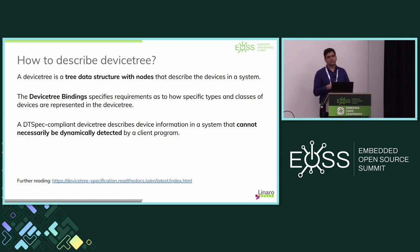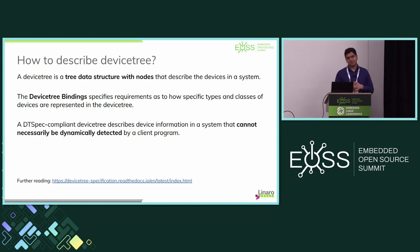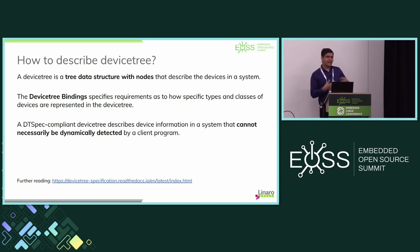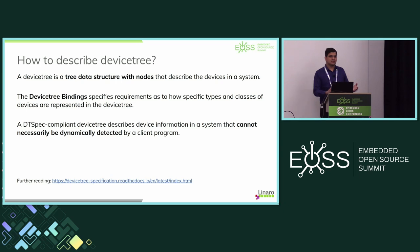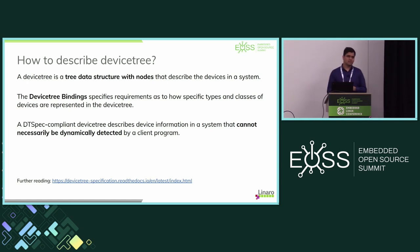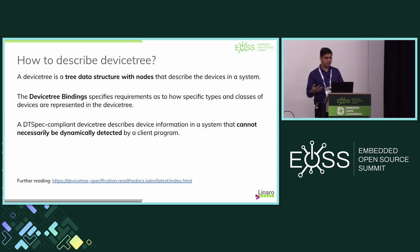As a primer: device tree is a tree data structure with nodes that describes devices in a system. Bindings documentation defines the requirements for how devices must be represented. Device tree describes non-discoverable hardware — devices on SPI, I2C, or platform buses — rather than discoverable ones like USB or PCI. A link to the specifications is provided for further reading.